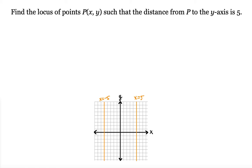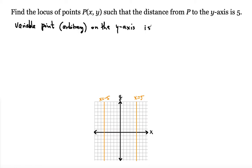To confirm this algebraically, we can use the distance formula. We assign a variable point on the Y-axis. On the Y-axis there can be millions of different points, so we use an arbitrary point (0, y) — because the x-value is always 0 on the Y-axis, but the y-coordinate varies since you can be above, on, or below the X-axis.